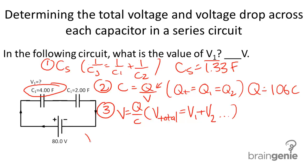So our voltage formula is going to be 106, because that's the same, divided by 4 farads, because that's the capacitance of this capacitor. And then we get a value of 26.5 volts as our final answer.